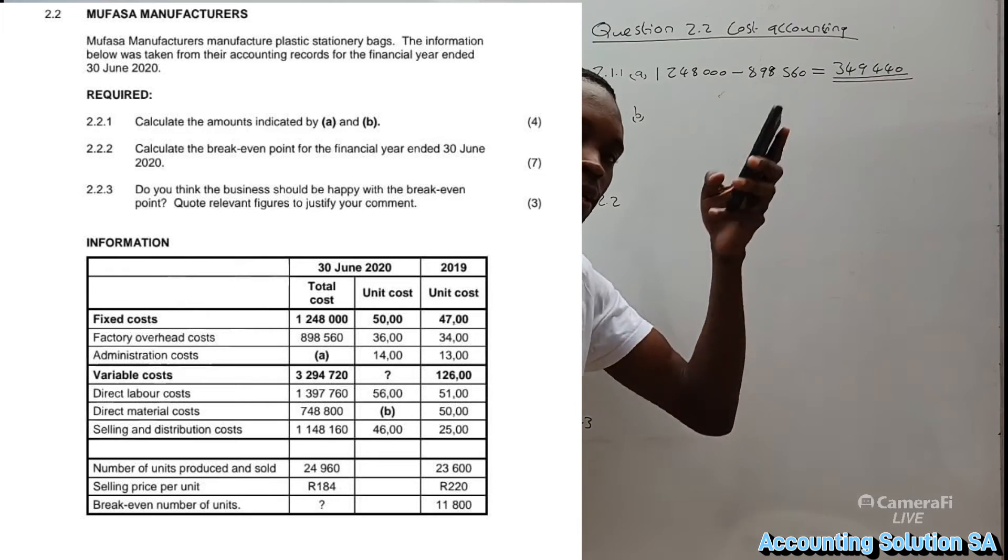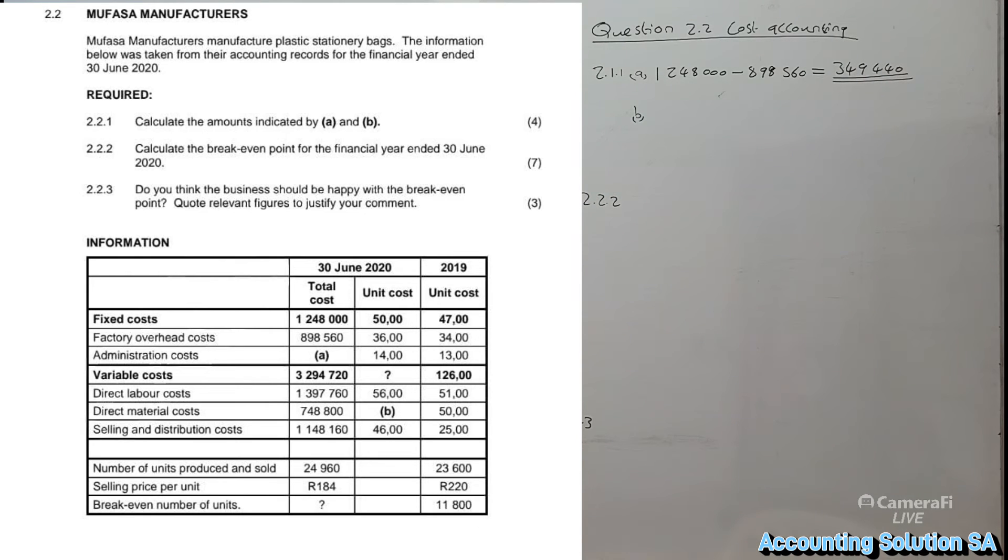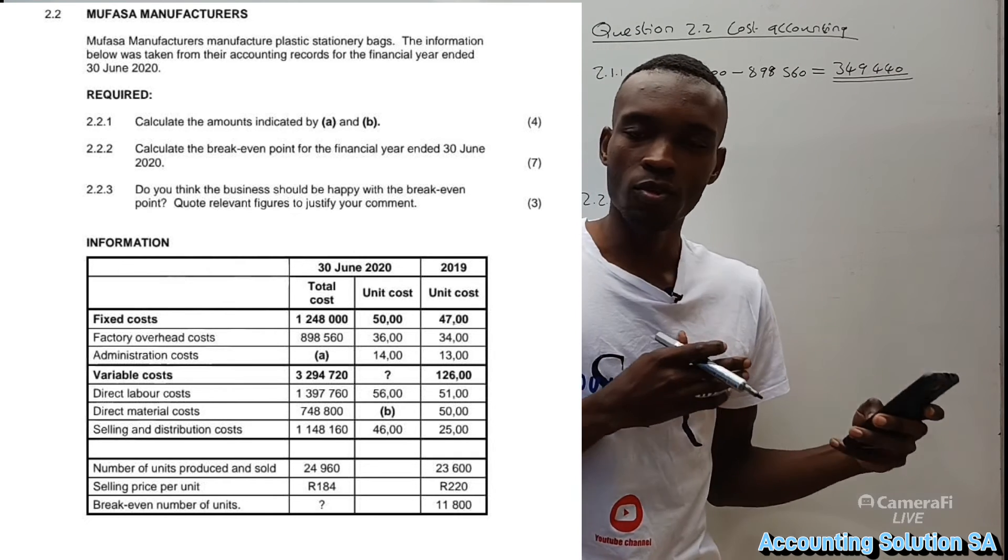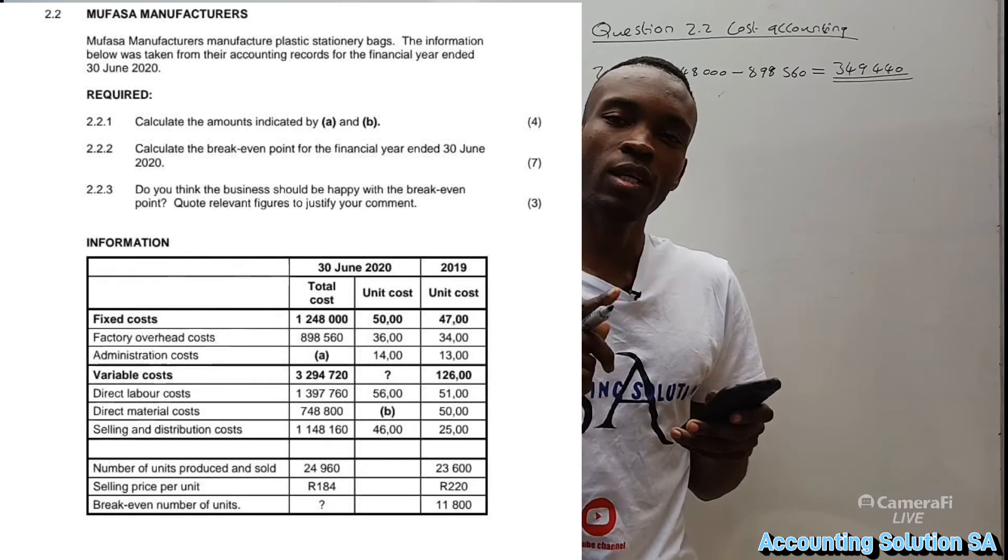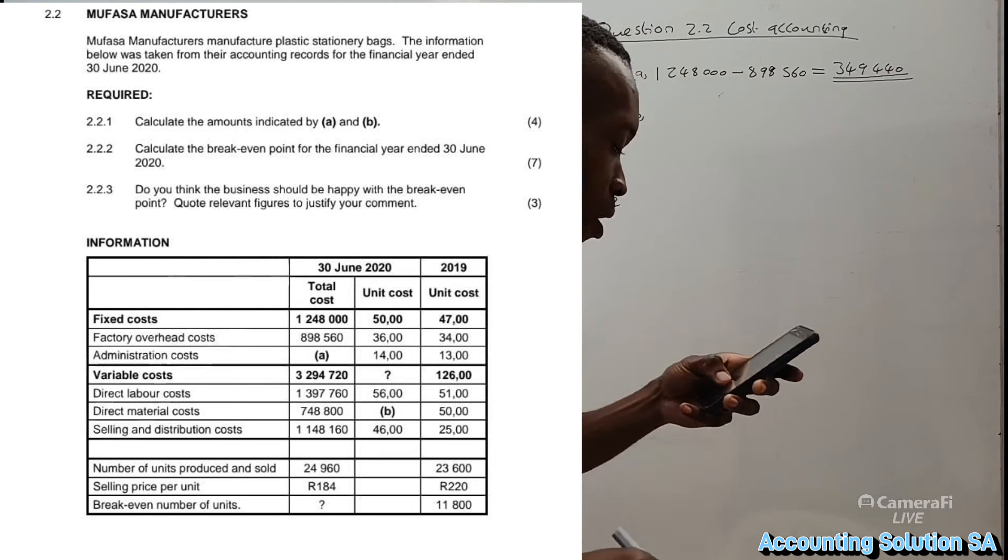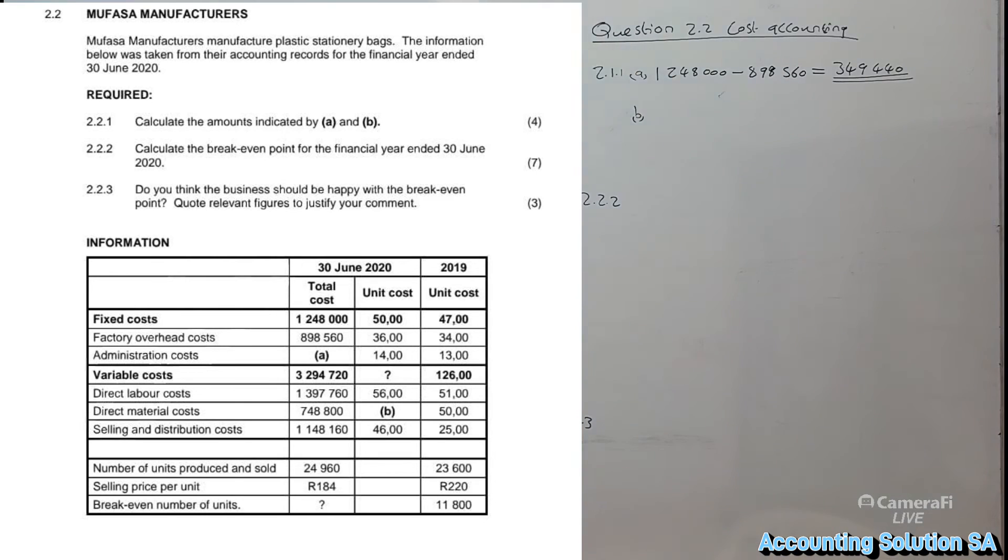Number B: we are looking for unit cost under variable cost. They give us a direct material cost total of 748,800. Remember, variable cost depends on the number of units produced. In order to get unit cost, how much it costs per one unit, we must first identify how many units we produced on 30 June 2020. We produced, if we check down there, 24,960 units.